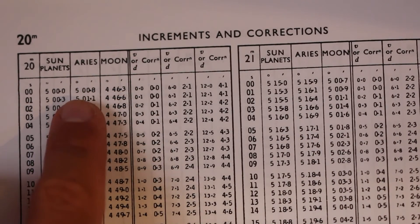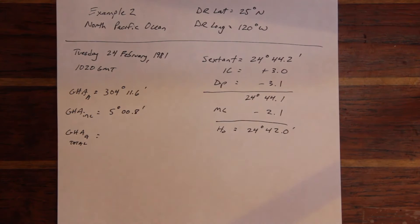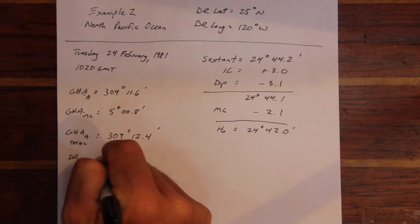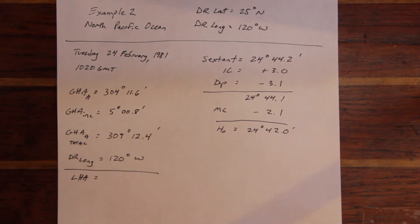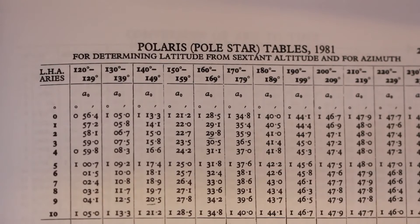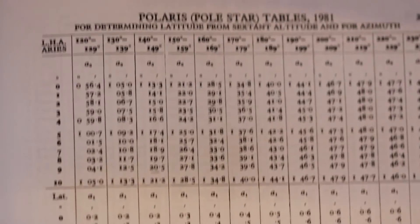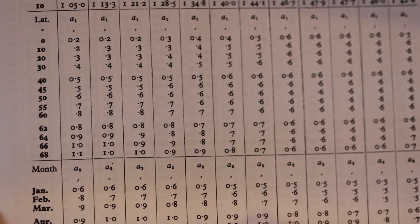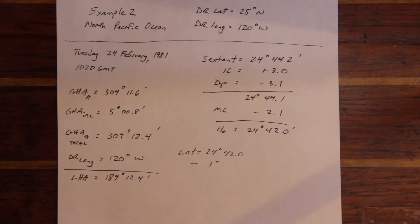Always remember to use the correct column in the increments and corrections pages. We need to determine the whole hours of GHA and then the increments of GHA, similar to calculating declination for the sun. Once we've determined the total GHA for Aries, we can apply our dead reckoning longitude to come up with a Local Hour Angle of Aries. We then enter the Polaris tables with the LHA of Aries and determine our three corrections: A0, A1, and A2. The A0 correction needs to be slightly interpolated. All that's left is to determine our latitude by applying the three corrections to our observed altitude.